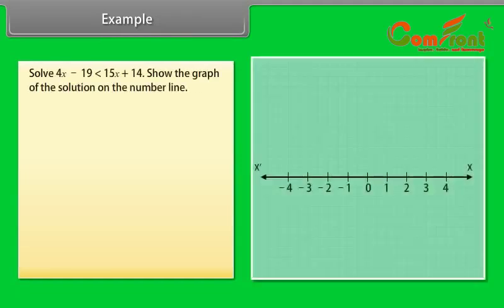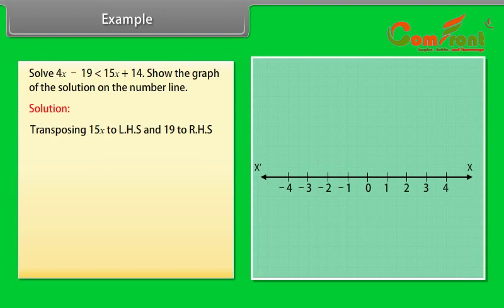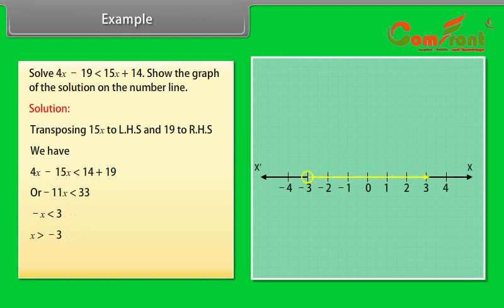Example: Solve 4x minus 19 less than 15x plus 14. Show the graph of the solution on the number line. Solution: Transposing 15x to LHS and 19 to RHS, we have 4x minus 15x is less than 14 plus 19, or minus 11x is less than 33, so minus x is less than 3, therefore x is greater than minus 3. This inequality is shown on a number line. We draw an open circle because x is not equal to minus 3, and an arrow to the right because we want values greater than minus 3.